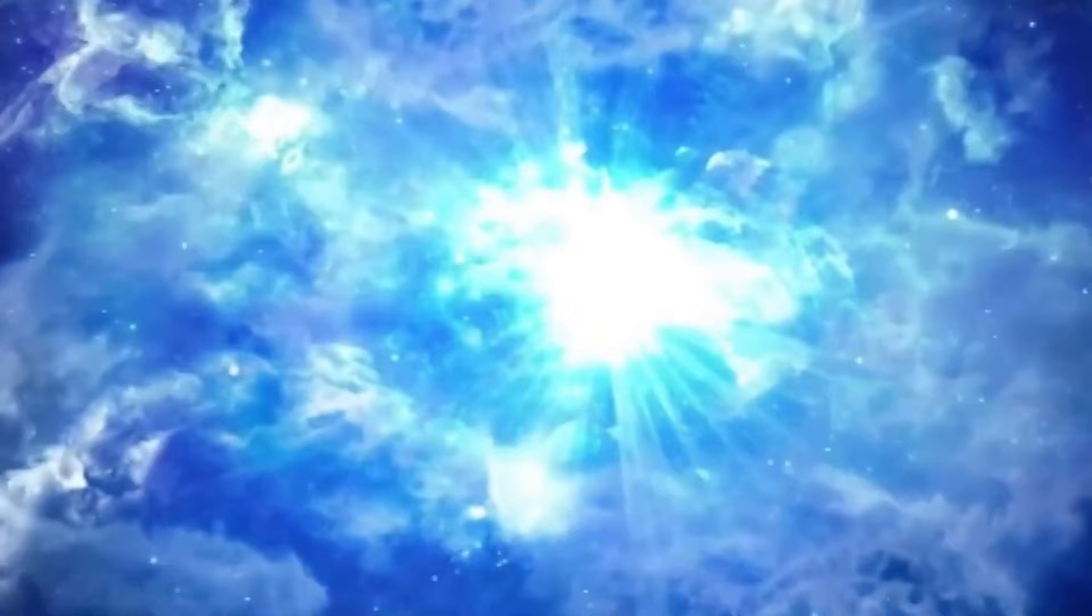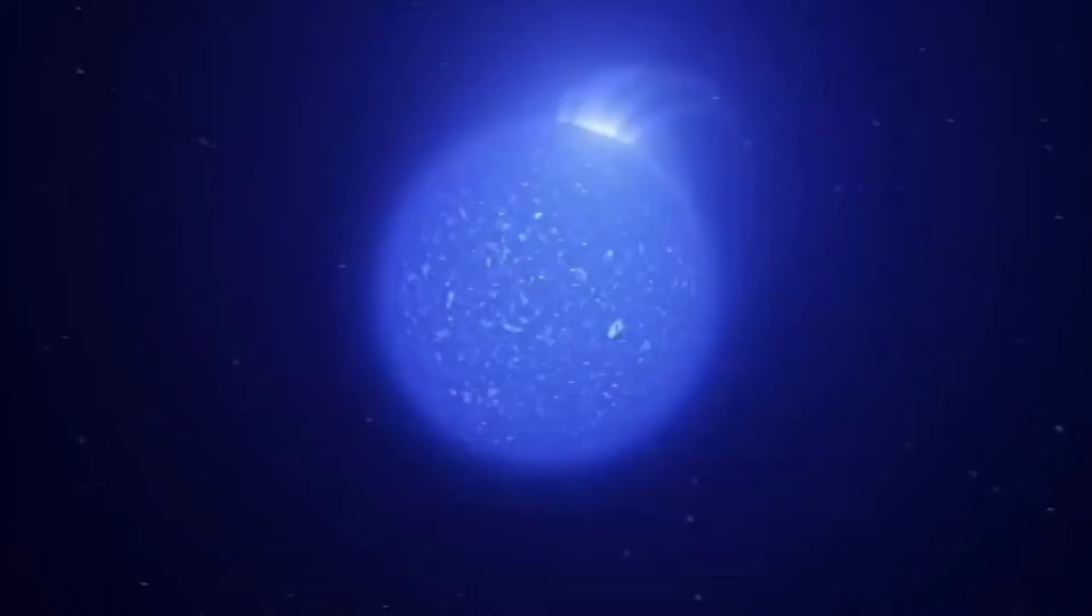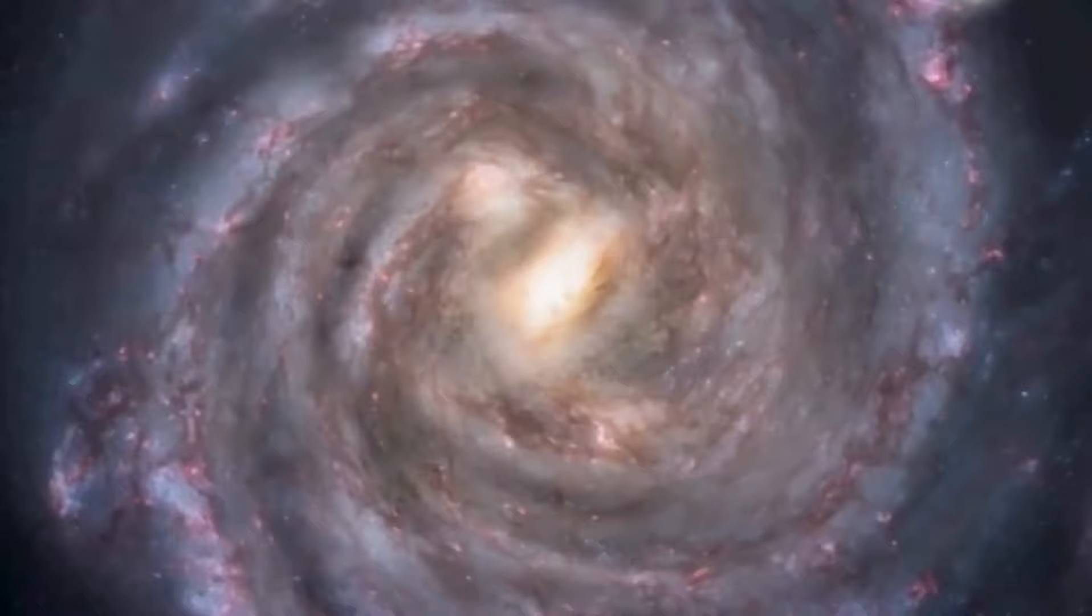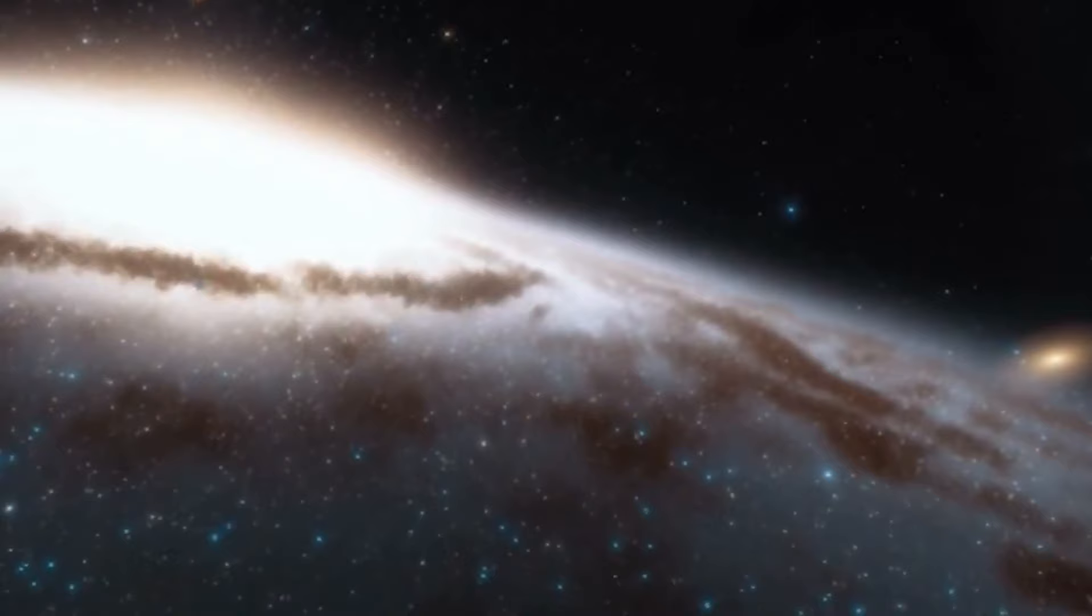With over 4,000 exoplanets discovered to date, their prevalence throughout the universe is undeniable. Hot Jupiters, with their massive size and rapid rotation, are among the easiest to detect, yet countless exoplanets remain hidden, awaiting their moment in the cosmic spotlight.